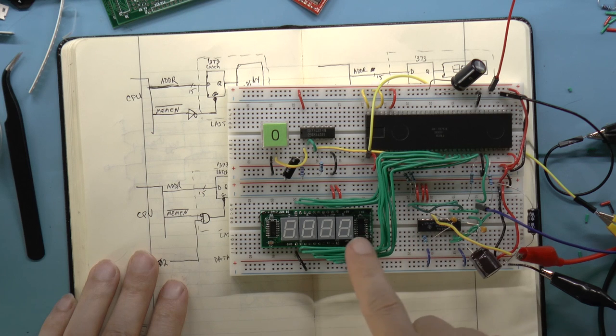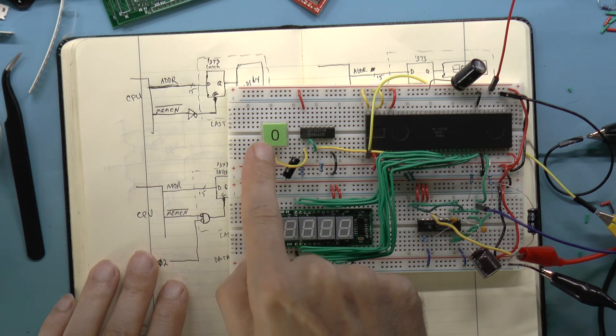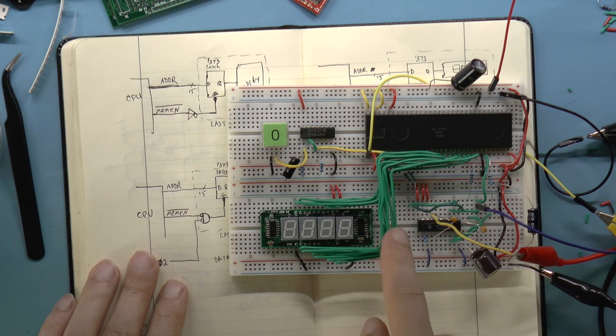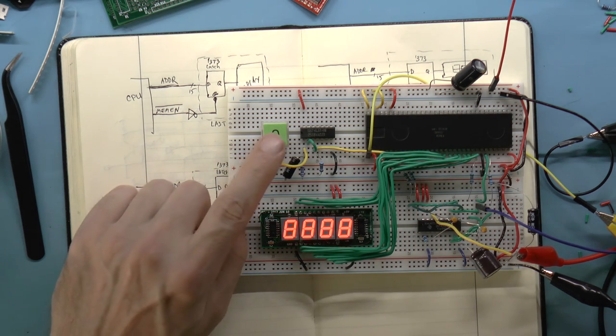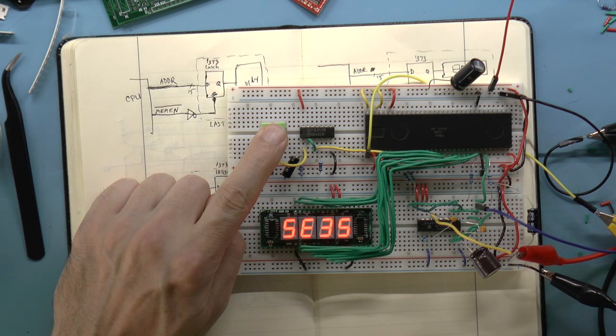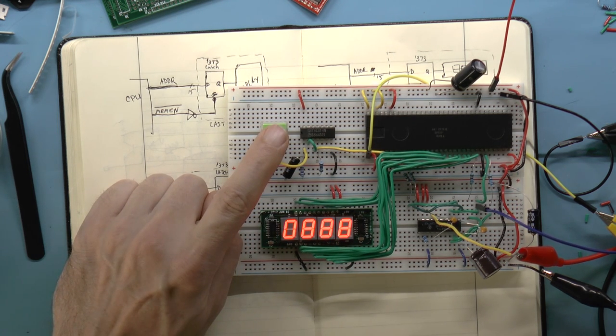Okay, I've hooked up the CPU address lines to the display. This button is the reset signal, and here's the clock generator chip from before. Interestingly, even though I have no latches here, it looks like the display is showing something when I assert reset on the CPU.